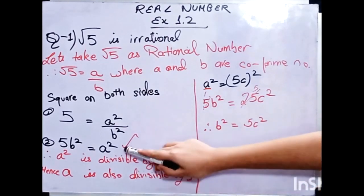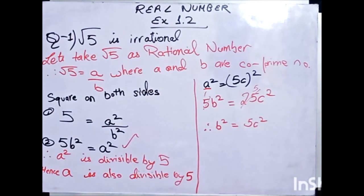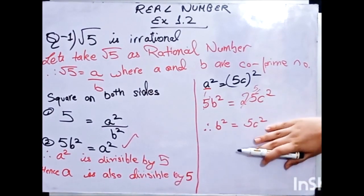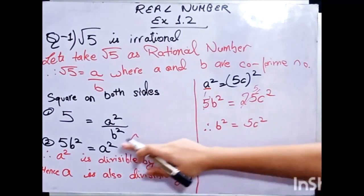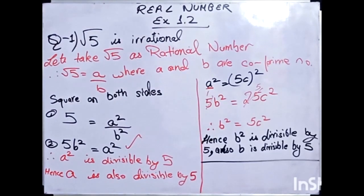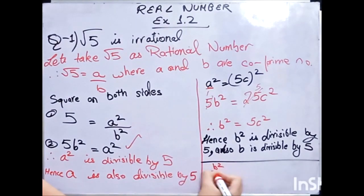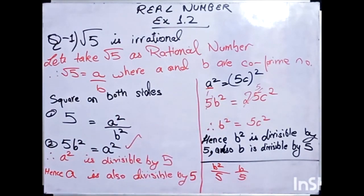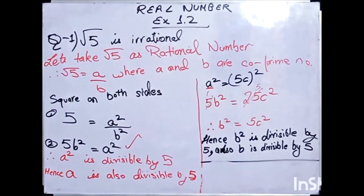Now we can check — the same scenario we got for A, we are getting for B as well. So we write the same line: hence B squared is divisible by 5, and therefore B is also divisible by 5.